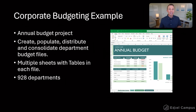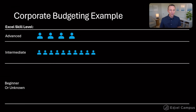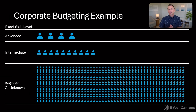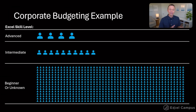We had 928 departments worldwide, which means 928 Excel files and about 800 people involved in this process. Some of the managers managed multiple departments. When I broke down the skill level of all these people, we had a handful of advanced users, several intermediate users, and the rest were either beginners or unknown skill level — because they're department managers, not necessarily using Excel all day.